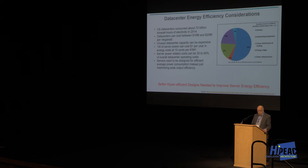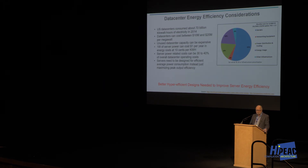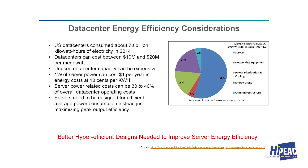Energy costs: every watt of server power can cost one dollar per year if your energy costs are 10 cents per kilowatt-hour. In some places energy costs are even higher, though most large cloud data center companies put their data centers where it's more like 3 to 5 cents. The pie chart on the right shows the total cost of ownership over a 3-year period, and you can see that 38% — more than one third of the cost — is related to energy.